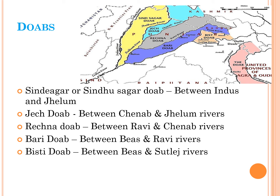A doab means the land between two streams of a river — the place where two small streams join and appear as a big river, essentially separating two rivers. Between the Indus and Jhelam, the doab is called Sindhigar or Sindhusagar doab. Between Chinab and Jhelam, it is Jez doab. Between Ravi and Chinab, it is Rachna doab. Between Beas and Ravi, it is Bari doab. And between Beas and Sutlej, it is Bist doab.